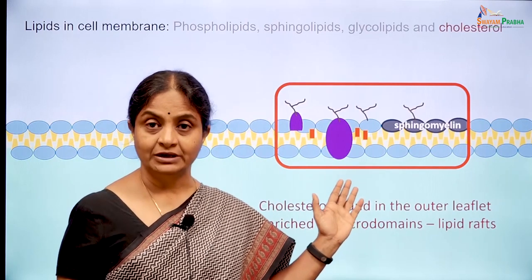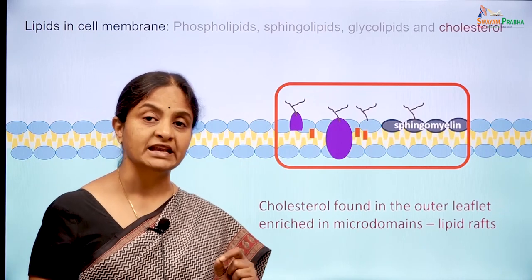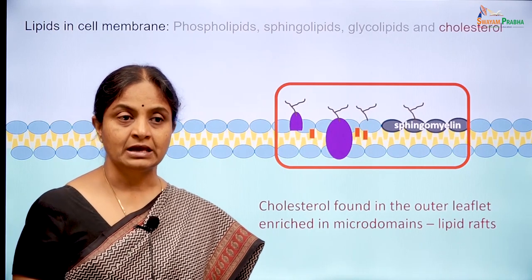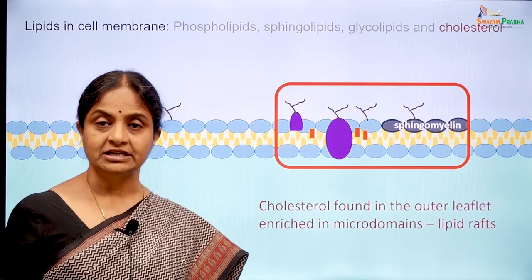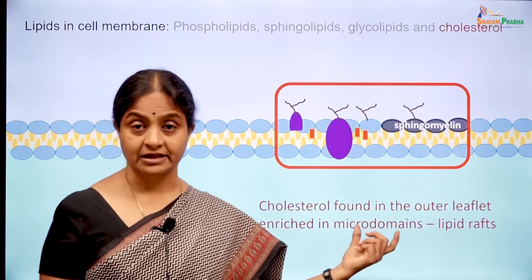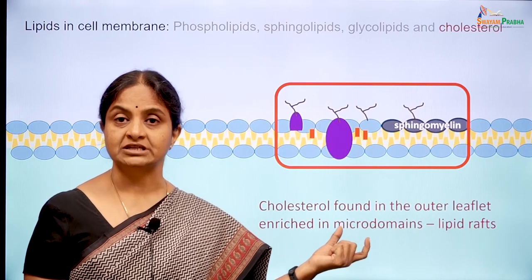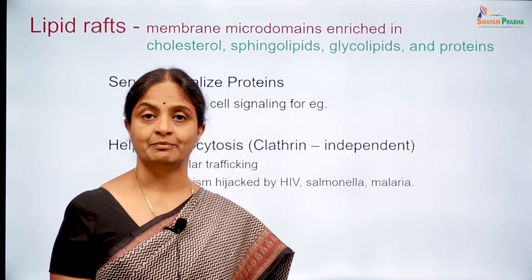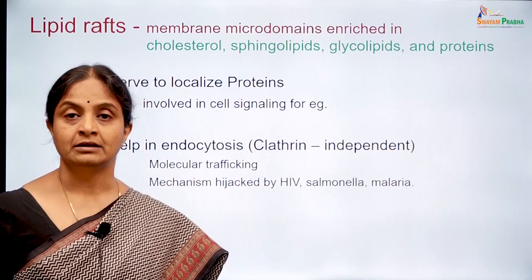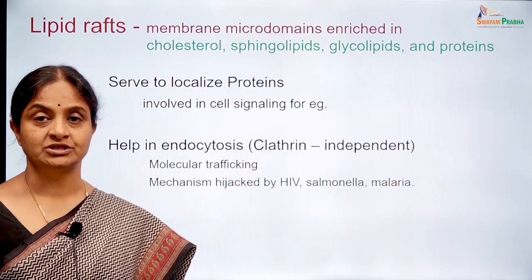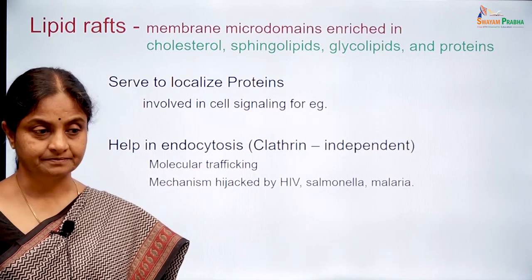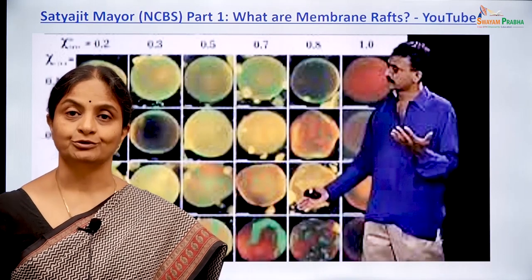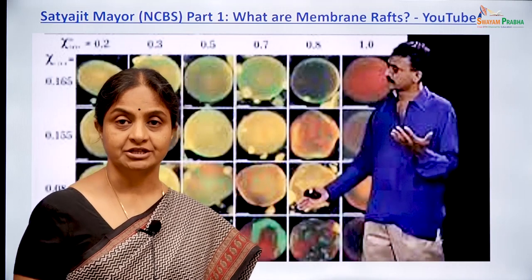Lipid rafts offer another mode of endocytosis — clathrin-independent endocytosis — which has become a serious topic for research because this mechanism seems to be the one by which certain pathogens gain entry into the cell, such as HIV, Salmonella or the malarial pathogen. Professor Satyajit Mayer at the National Center for Biological Sciences, Bengaluru, is a pioneering researcher in the field of lipid rafts and there are YouTube lectures by him if you want to learn more.